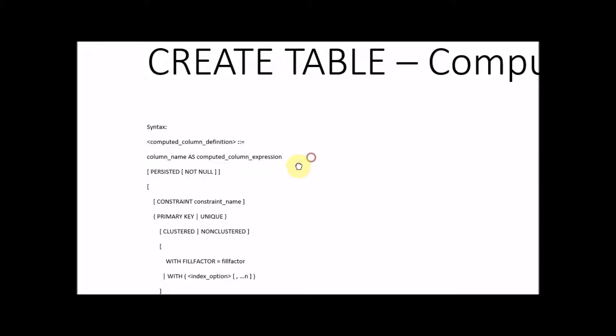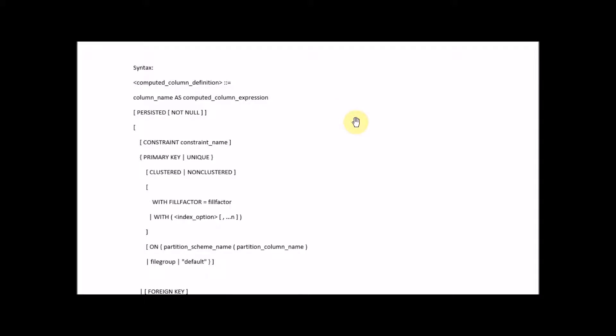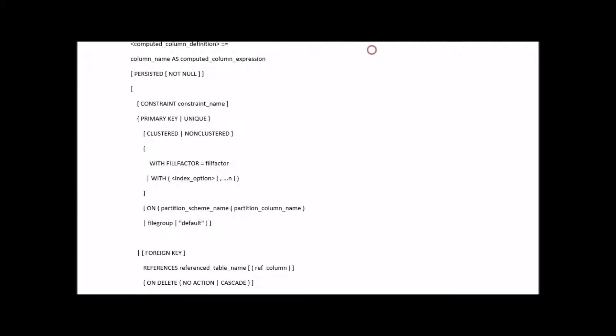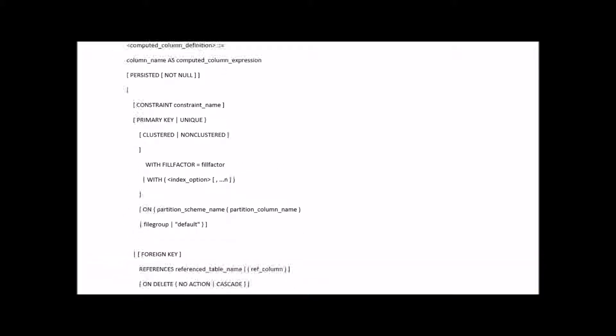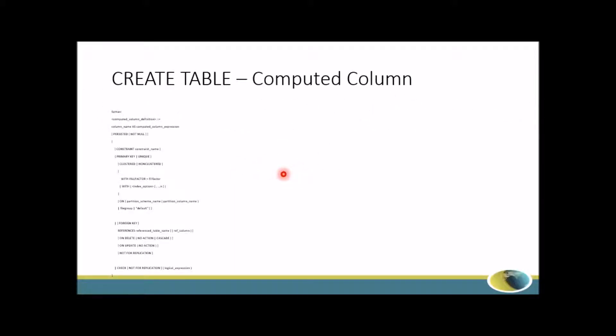This is the syntax for computed column. For example, if your database table has column 1 and column 2, you can have column 3 as a computed column. Column 3 can be computed based on column 1 and column 2 — for example, C3 equals C1 multiplied by C2. You define the computation for column 3 using the computed column syntax. I will explain this properly in a future video.